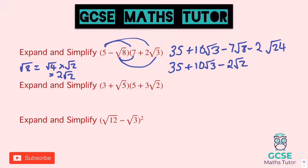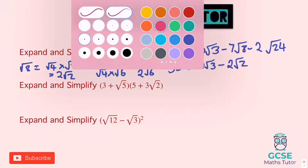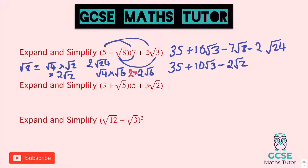So that negative 7 root 8 turns into negative 14 root 2. And root 24 simplifies as well: root 24 is root 4 times root 6, which is 2 root 6. We have 2 lots of that, so it's 2 lots of 2 root 6, giving minus 4 root 6. So we've got 35, add 10 root 3, take away 2... take away 14 root 2, take away 4 root 6. None of those join up, so there's quite a long answer, but that is our final answer.